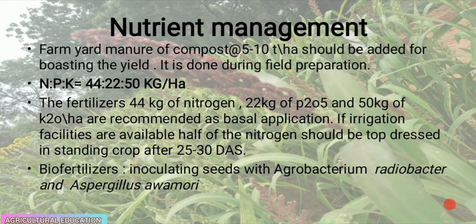Farmyard manure or compost at the rate of 5 to 10 tons per hectare should be added during field preparation to boost yield. Nitrogen, phosphorus, and potassium are recommended at 44:22:50 kg per hectare. Fertilizers — 44 kg nitrogen, 22 kg P₂O₅, and 50 kg K₂O per hectare — are applied as basal. If irrigation is available, half the nitrogen should be top-dressed 25 to 30 days after sowing. Bio-fertilizers include inoculating seeds with Azotobacter, Agrobacterium radiobacter, and Aspergillus.